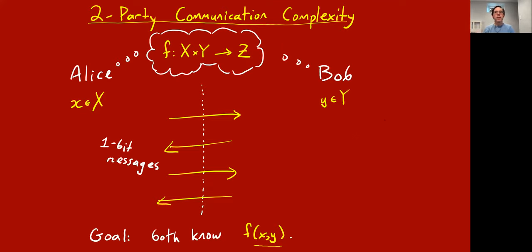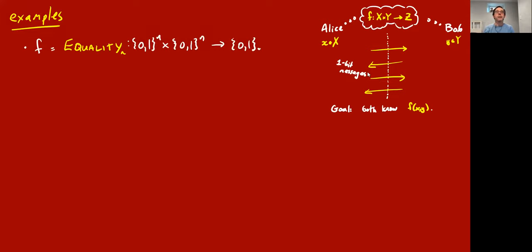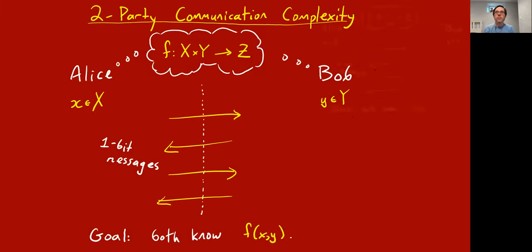As the name communication complexity suggests, the only thing we charge Alice and Bob for is how much communication they do. Conversely, they're not charged at all for how much computation they do — they can do arbitrarily complex computation on their own. We can assume without loss of generality that whenever they communicate a message it's one bit long, represented by yellow arrows. They need not alternate either.